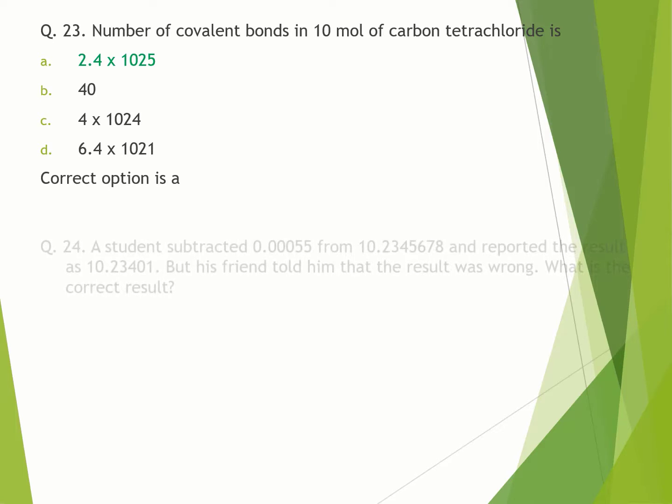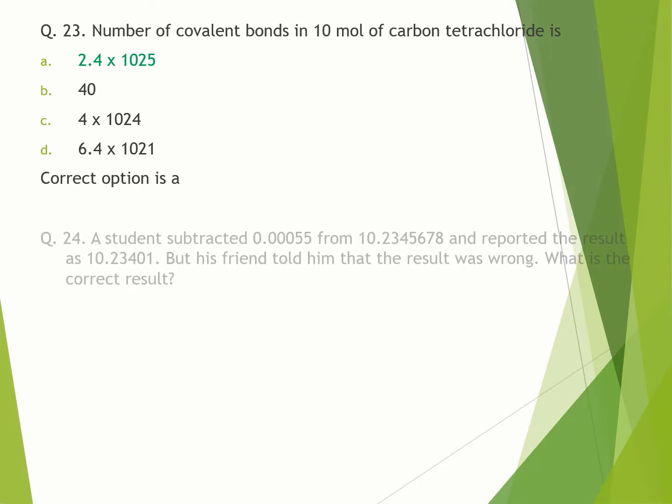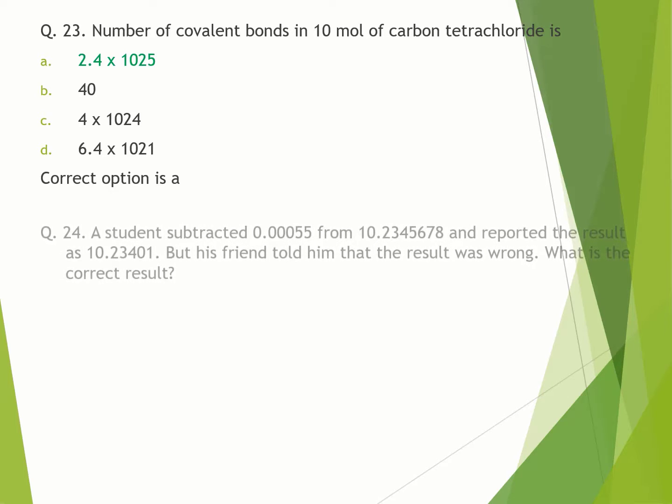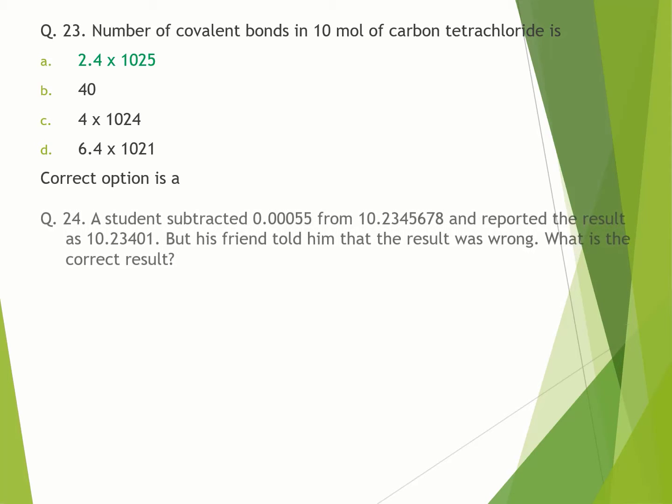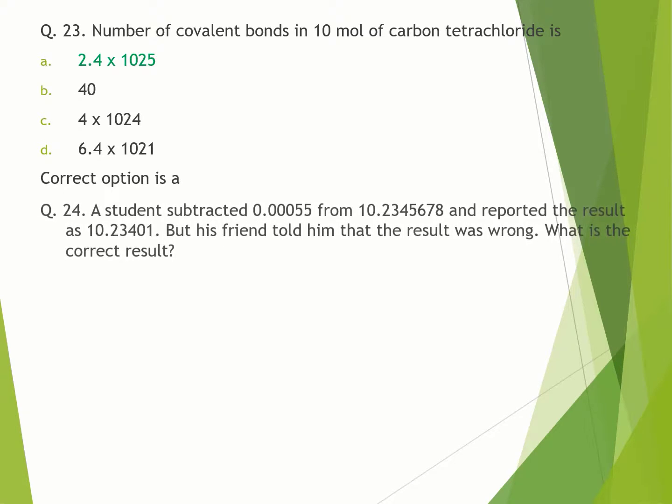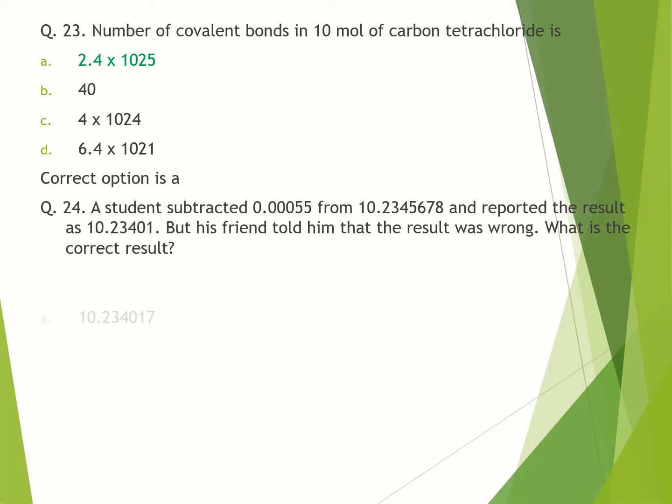Question number 24. A student subtracted 0.000055 from 10.2345678 and reported the result as 10.23401, but his friend told him that the result was wrong. What is the correct result? A. 10.234017. B. 10.2340178. C. 10.234. D. 10.23. Correct option is D.